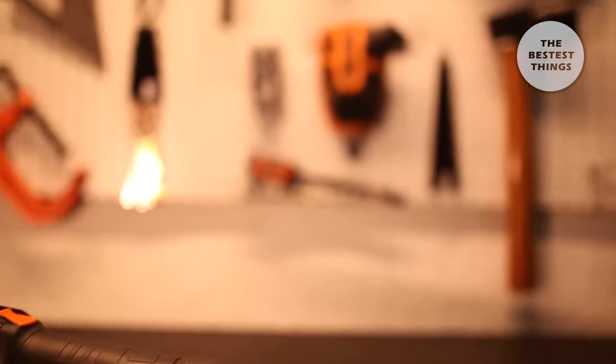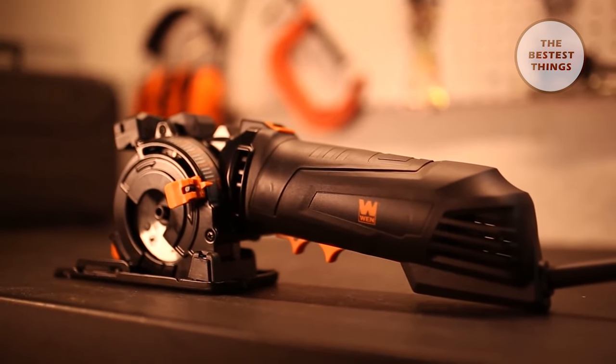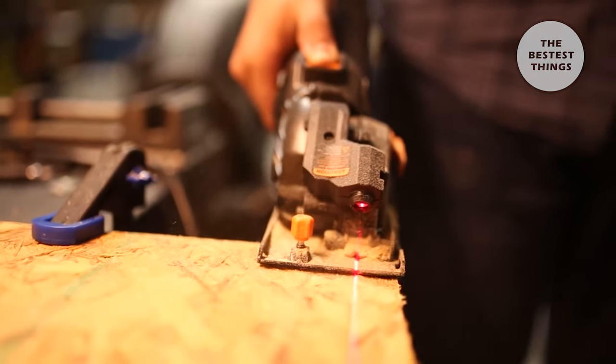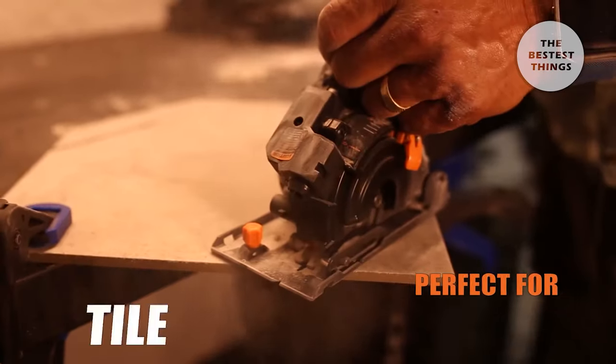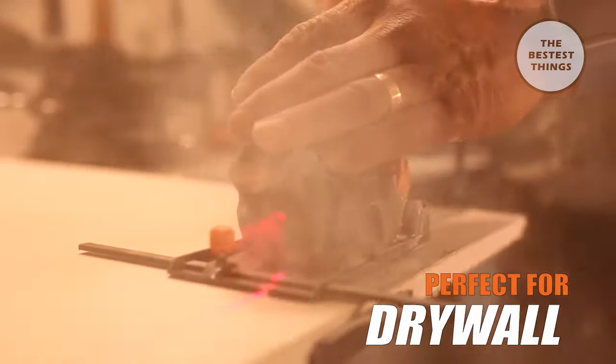Remember when you had the right saw for any situation? The Wynn 3 3/8 inch compact circular saw provides versatile and lightweight power all in the palm of your hand. Take on wood, tile, plastic, copper, aluminum, PVC, drywall, and so much more.